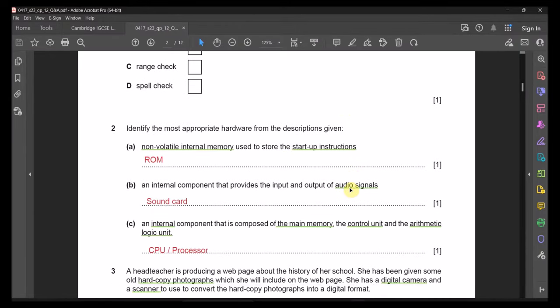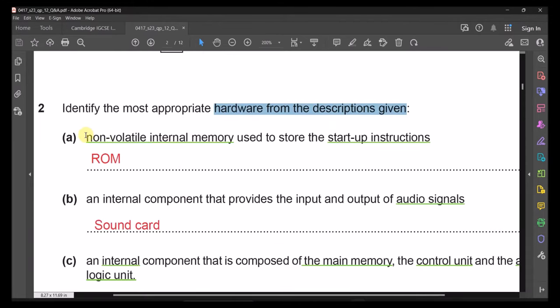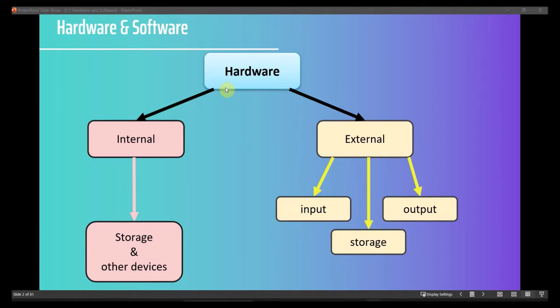Question 2: Identify the most appropriate hardware from the description given. You need to pay attention to keywords. Hardware has two categories: internal and external. Internal hardware is usually inside the device — RAM, ROM, CPU, motherboard, etc. External hardware is visible and used daily, like mouse, keyboard, screen, and touch pen.